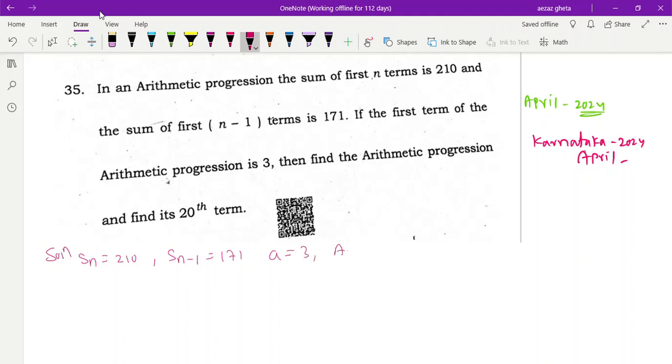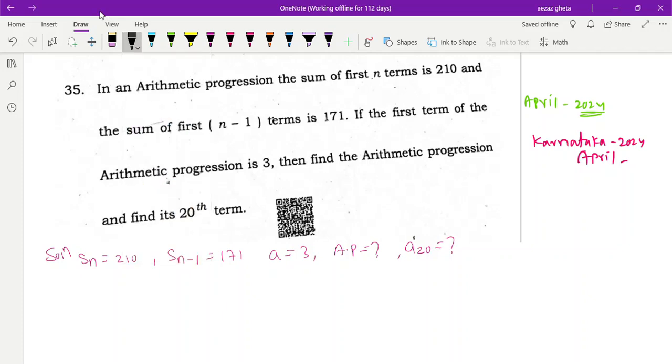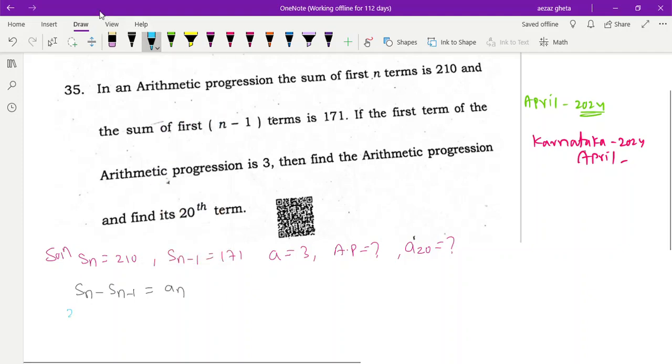Find the AP and even the 20th term. Okay everybody, let's do it. See, we have one formula in which Sn minus Sn minus 1 will get us, here this is the formula. Sn is given 210, okay let us decrease this thickness. Sn is 210 minus Sn minus 1 is 171 will fetch you An.